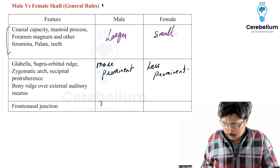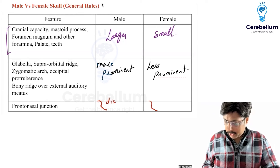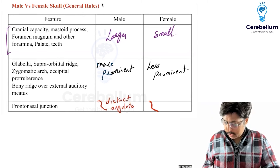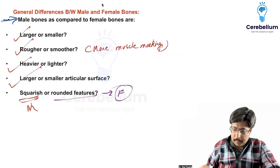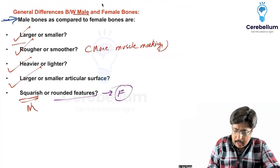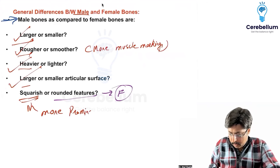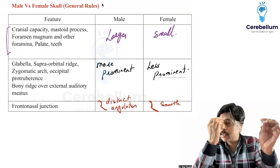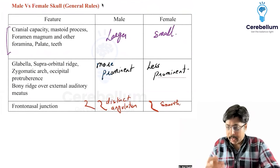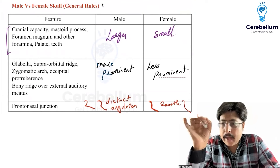The fronto-nasal junction is distinct and angulated in males, whereas in females it is smooth. This follows the general rule: male bones are larger, rougher, heavier, have larger articular surfaces, and have more prominent features compared to female bones. In females, everything is smooth — just remember that.